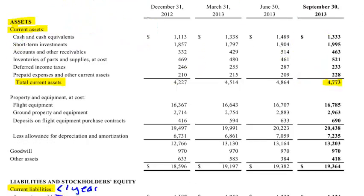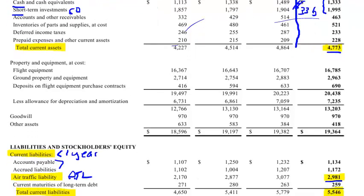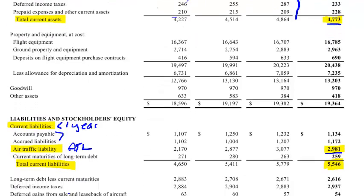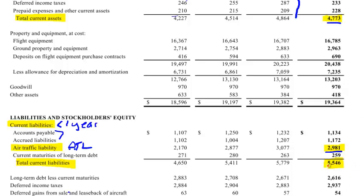Southwest has four point seven billion dollars in current assets, which seems like a big number, but when you look at their current liabilities it doesn't look quite so big — they have five point five billion dollars in current liabilities. We added the caveat that airlines are unique: they have this air traffic liability, and for Southwest almost three billion dollars of their current liabilities are in this ATL, so you have to take it with a grain of salt.